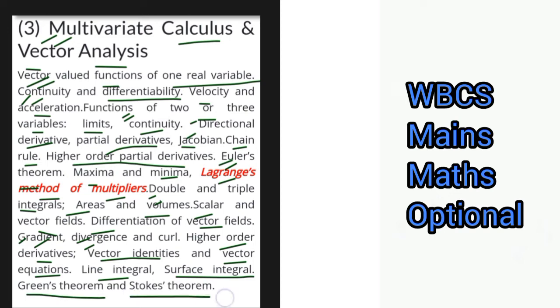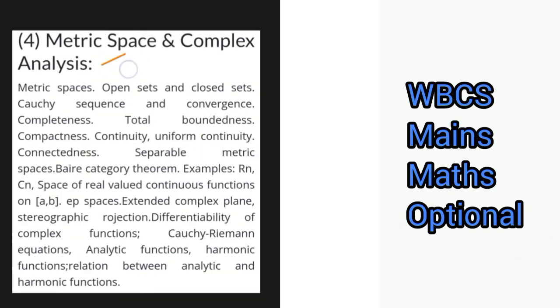In the next portion you have Metric Space and Complex Analysis covering metric spaces, open sets, closed sets, Cauchy sequence and convergence, completeness, total boundedness, compactness, continuity, uniform continuity, connectedness, separable metric spaces, Baire category theorem, examples including R^n, C^n, space of real valued continuous functions on [a,b], lp spaces, extended complex plane, stereographic projection, differentiability of complex functions, Cauchy-Riemann equations, analytic functions, harmonic functions, and relation between analytic and harmonic functions.